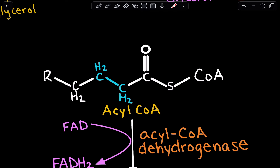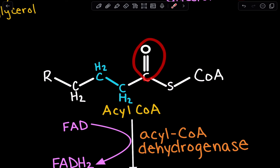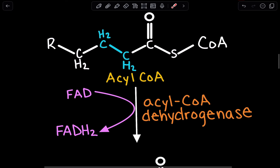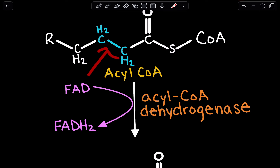The reason we call this beta-oxidation is because we are interested in the alpha and beta carbons. When we have our carbonyl, right next to the carbonyl is our alpha carbon and then our beta carbon. Here we are trans and we are unsaturated — the hydrogens are on opposite sides. This is not a cis structure where they are on the same side. And we are saturated.